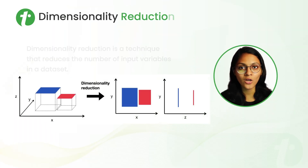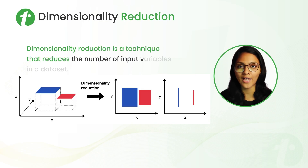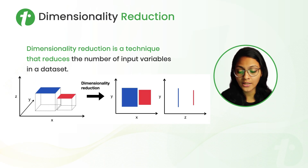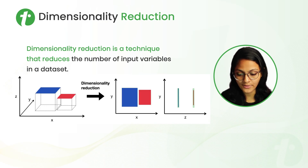Let's talk about Dimensionality Reduction. As the name suggests, it is the reduction in dimensionality — meaning the reduction of the number of variables in a dataset. On the screen, you can observe a 3D dataset. After Dimensionality Reduction, it becomes 2D. If we observe from the X and Y plane, we see rectangles, and if we observe from the Z and Y plane, we see straight lines.